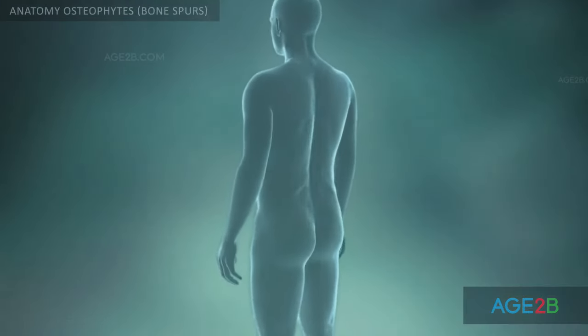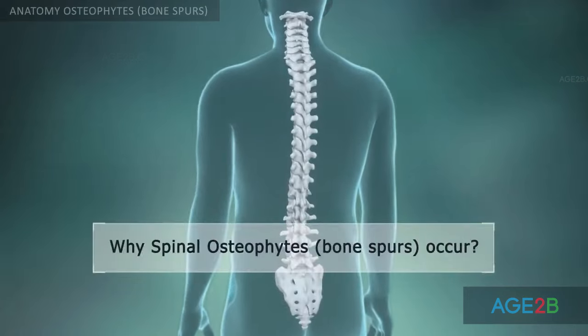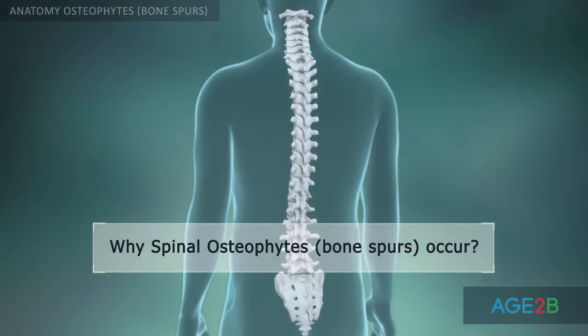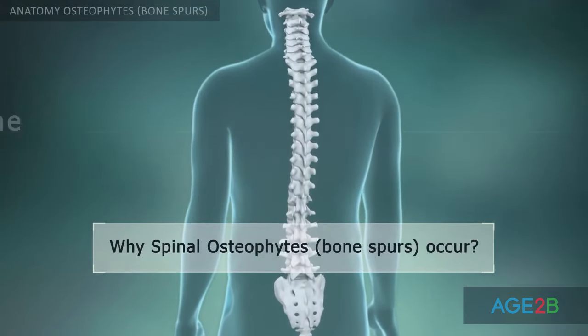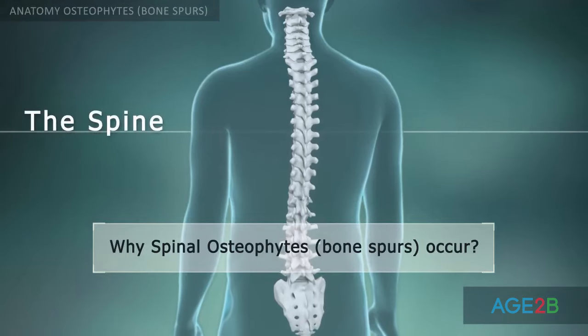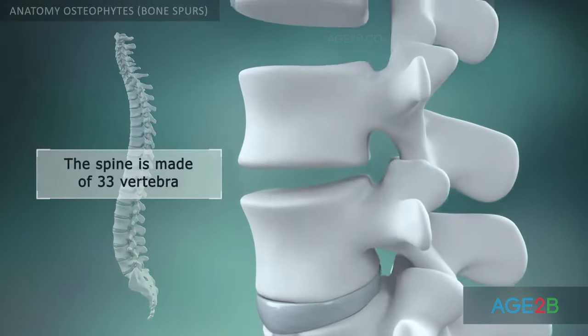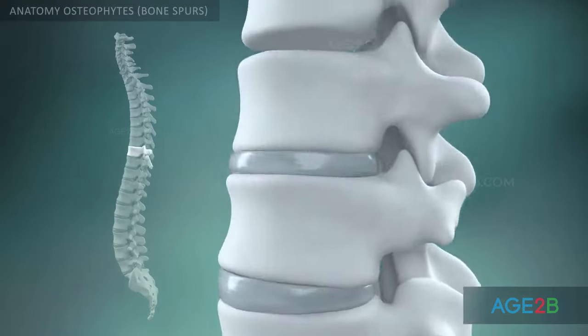In order to understand why spinal osteophytes, or bone spurs, occur, it's helpful to know the basic anatomy of the spine. The spine is made up of 33 individual bones called vertebrae.